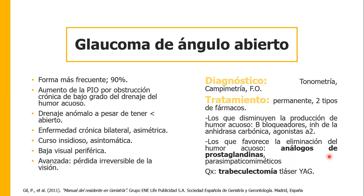El glaucoma de ángulo abierto produce baja visual periférica, por lo tanto el paciente puede conservar la visión central, y en etapas avanzadas se da una pérdida irreversible de la visión. Para hacer el diagnóstico de glaucoma siempre son tres pilares: medir la presión a través de la tonometría, medir campos visuales, y hacer un fondo de ojo buscando en el disco la excavación fisiológica que no sea mayor al 30-40%.